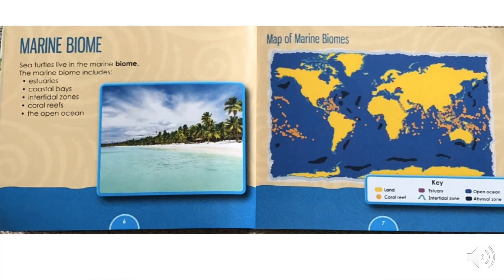Marine Biome. Sea turtles live in the marine biome. The marine biome includes estuaries, coastal bays, intertidal zones, coral reefs, and the open ocean.